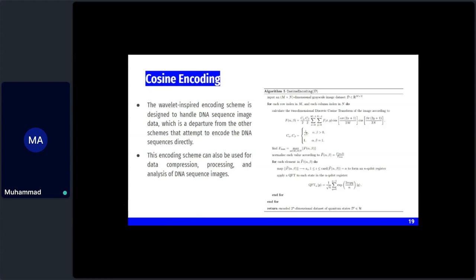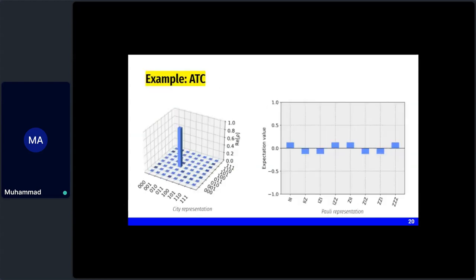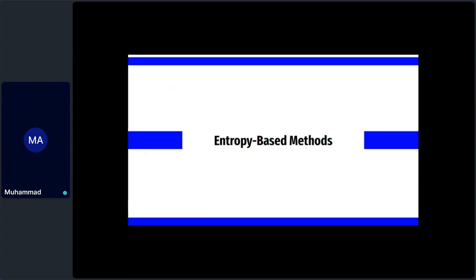The algorithm takes an n×n dimensional image and returns a 2n-dimensional dataset in Hilbert space together with the encoded state. Due to two for-loops in the algorithm, it has a quadratic runtime complexity. That concludes the lossless compression-inspired encoding schemes.